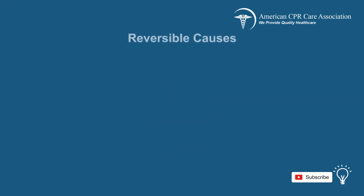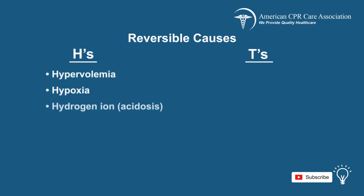Asystole can be caused by many reversible causes, which are represented by the H's and T's. We will go over the names of the 5 H's and 5 T's now, but for more details of each, please revisit the previous section. The H's are hypovolemia, hypoxia, hydrogen ion or acidosis, hyper or hypokalemia, and hypothermia.